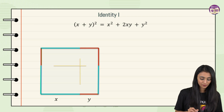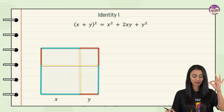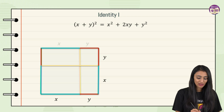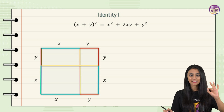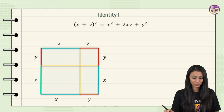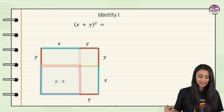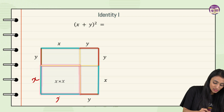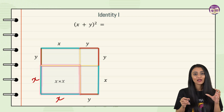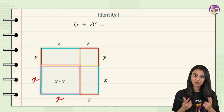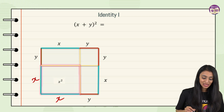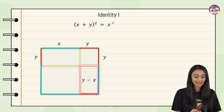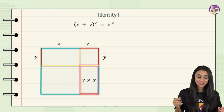Now I'm going to join these points wherever the color is changing. Let's label all the sides: the red lines are y and the blue ones are x. This first region is a square because both sides are x, so the area is x times x, which is x².